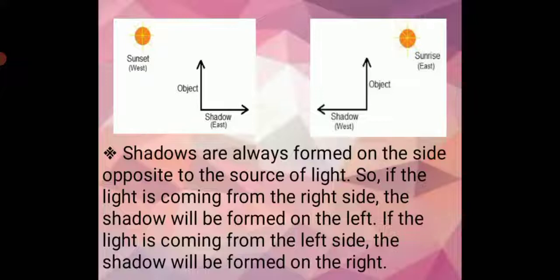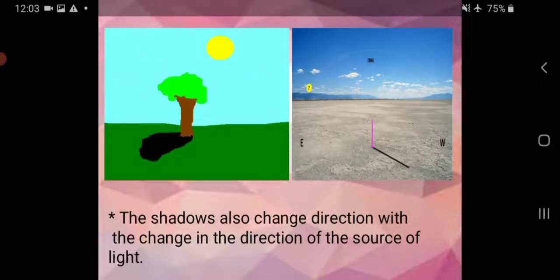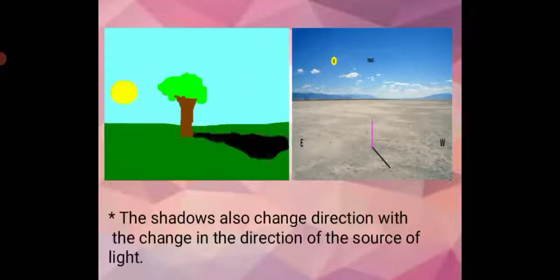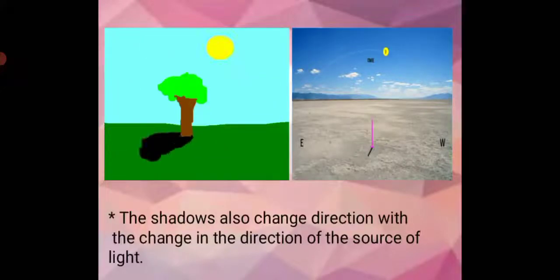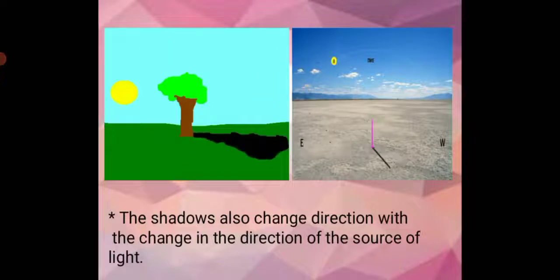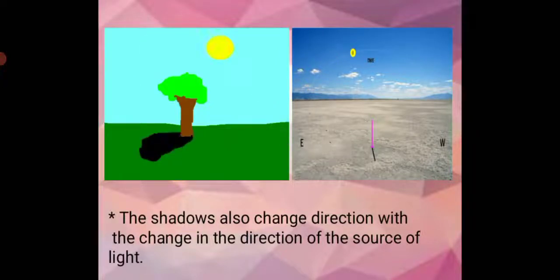By this picture, you can get the idea that as the sun changes its position in the sky, the shadow also changes its direction. Students, the shadows also change direction with the change in the direction of the source of light. You can see the sun moves in the sky, and the shadow also moves and changes its direction.